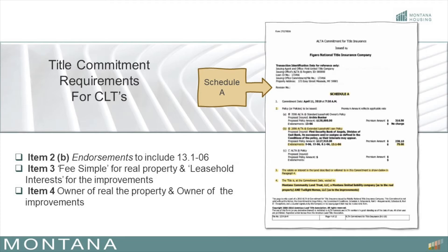Item number 3 on Schedule A on a Standard ALTA Title Commitment must show both fee simple for the real property and leasehold interest for the improvements. Number 4 on Schedule A of the commitment may or may not have the interest separated out between the fee simple ownership and the leasehold interest. However, on the final title policy, it must be separated out between the two and show the borrower with the leasehold interest and the CLT with the fee simple interest for the non-improved land.